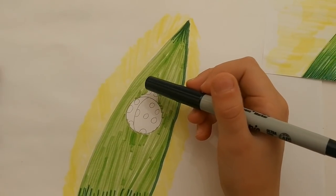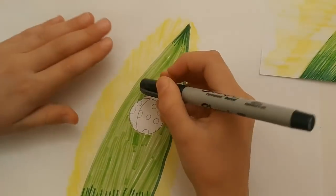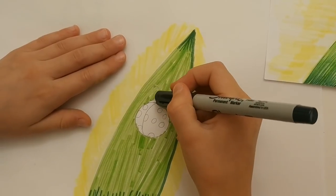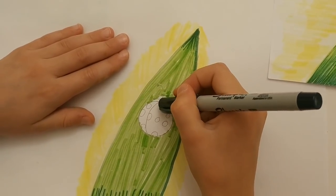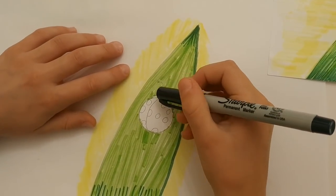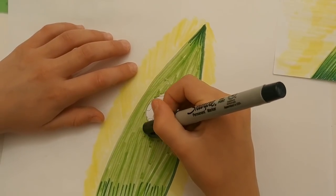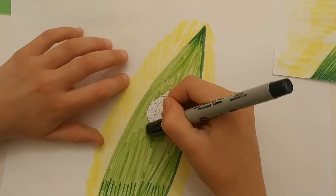Now, let's color the ladybug using a black marker. Trace the antennas, color the head except for the eyes, trace the bottom of her body and the line in the middle.